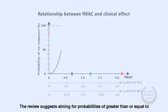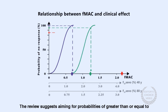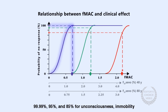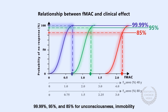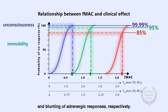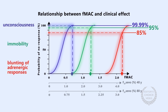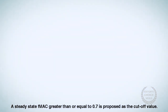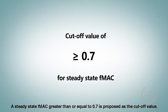The review suggests aiming for probabilities of greater than or equal to 99.99%, 95%, and 85% for unconsciousness, immobility, and blunting of adrenergic responses, respectively. A steady-state FMAC greater than or equal to 0.7 is proposed as the cut-off value.